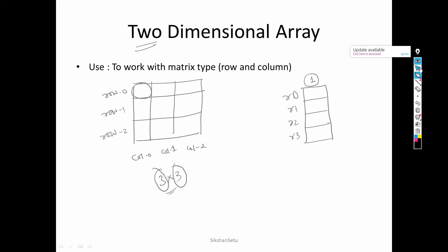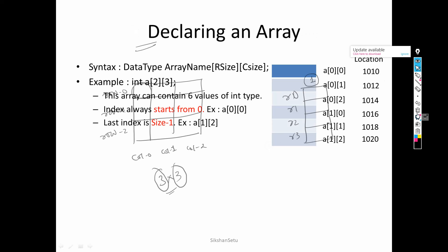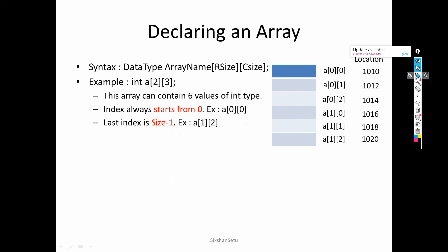Now we can see how to declare a two dimensional array. First the data type, then the name of the array, and since two dimensions — one is for row and one is for column — you specify how many rows and how many columns you want. The example is: integer a of two, three. It means that in this particular architecture there will be two rows and three columns.